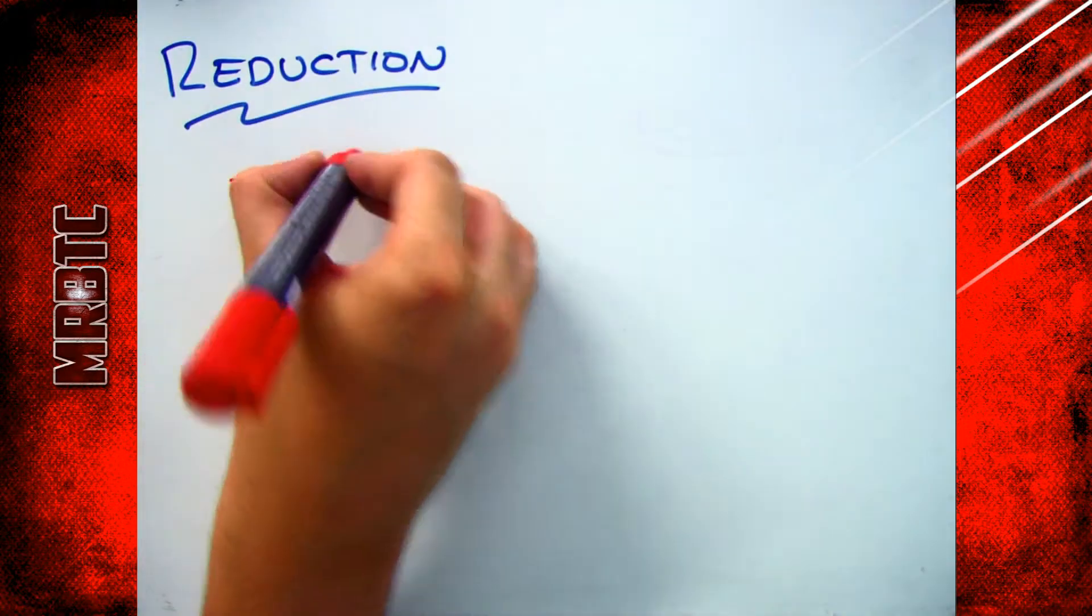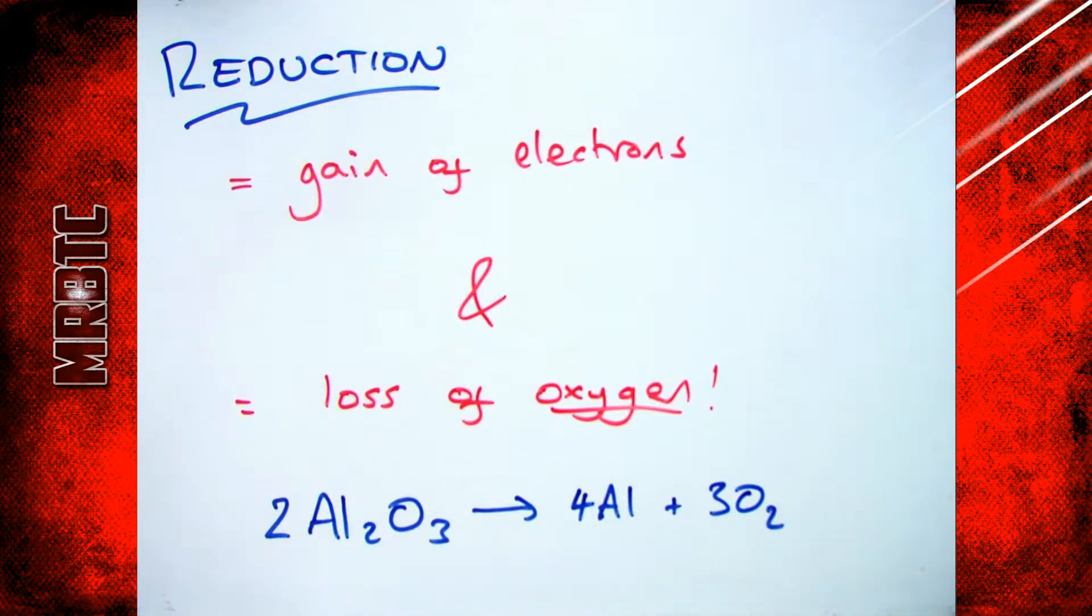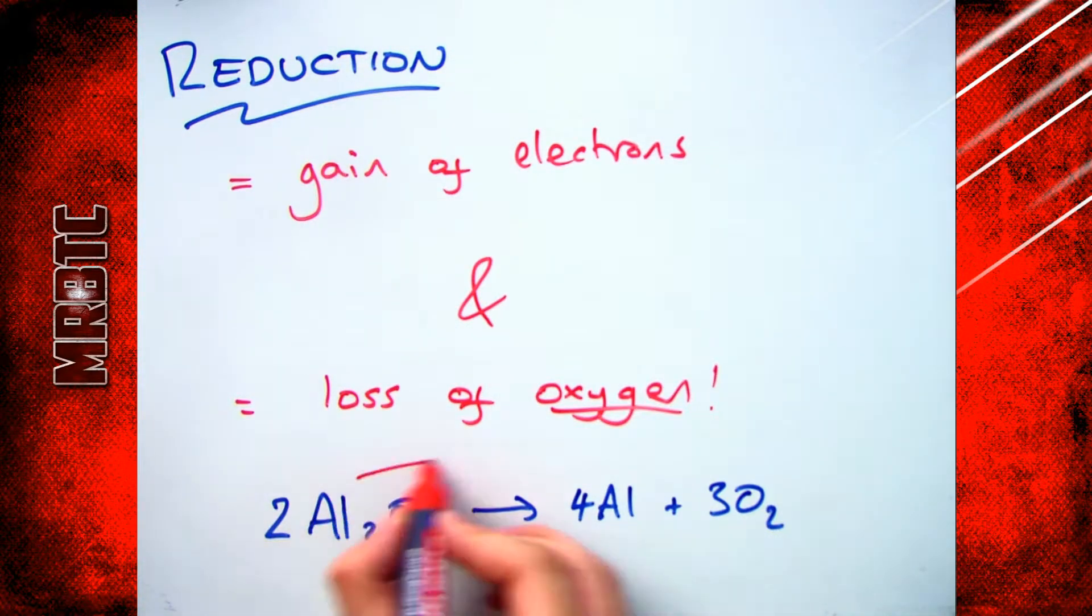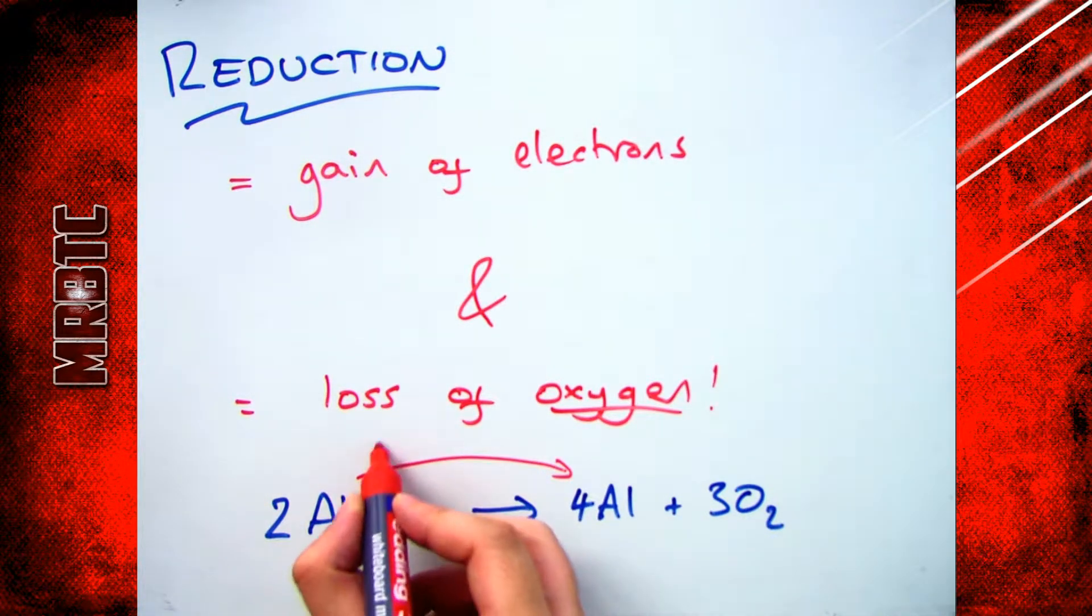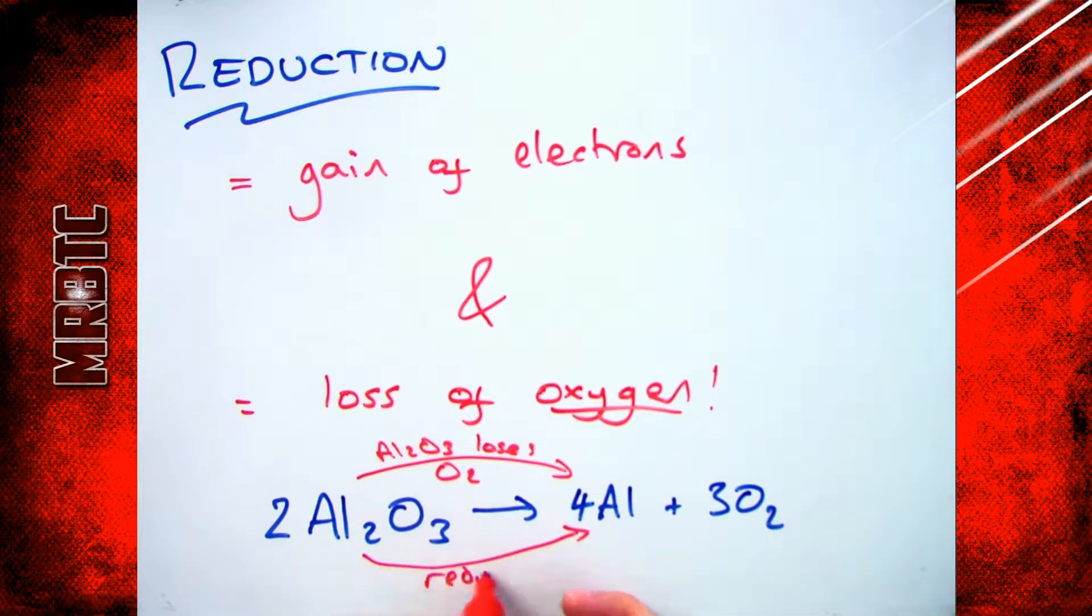Reduction, on the other hand, is the exact opposite. So in this case it's the gain of electrons and the loss of oxygen. So if we have the example of aluminium oxide, when that's electrolyzed and broken down into aluminium and oxygen, we say the aluminium oxide loses oxygen, therefore the aluminium oxide has been reduced.